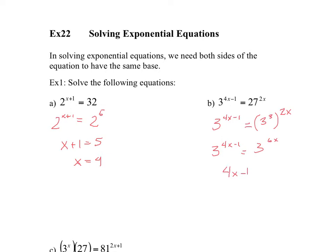So 4x minus 1 must equal 6x. I bring the 4x over here, so minus 4x. So you have minus 1 equals 2x. 2x divided by 2, you have minus 1 half equals x. Solved.